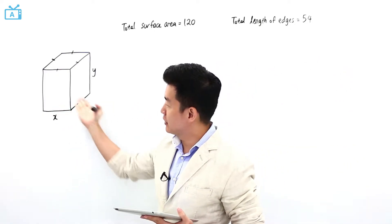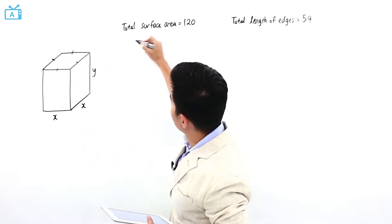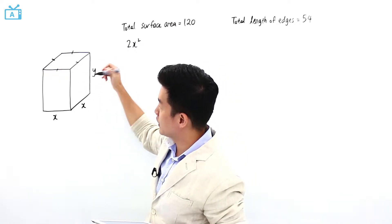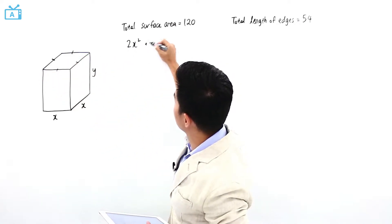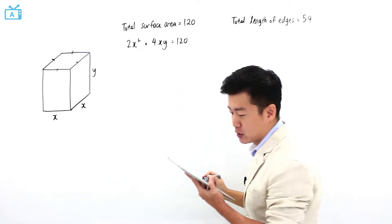So the bottom here is going to be x squared and here is also going to be x squared. So I have 2 times x squared and one side here is x times y. There are 4 of this, so it is plus 4 times xy. This is equal to 120.